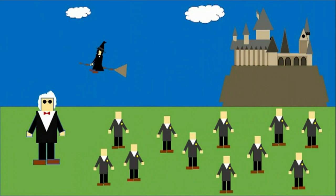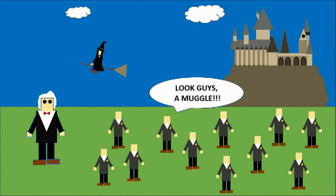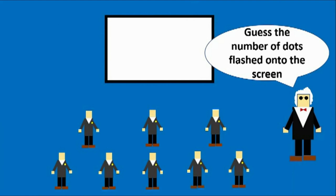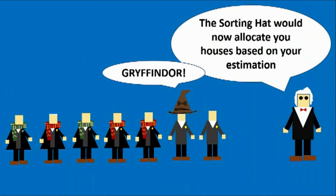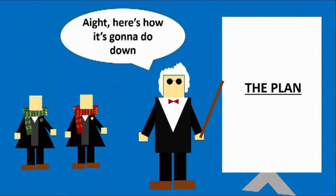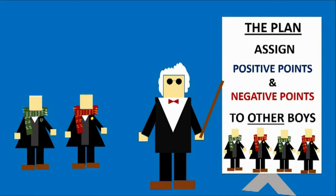In the first experiment, Tajfel told the boys they had to estimate the number of dots flashed onto the screen. After the boys had estimated the number of dots, they were divided into two separate groups. After they had been divided into groups, the boys were individually told by the experimenter that they now had to allocate positive and negative points to the other boys in the experiment. The boys were also told they would receive real money based on how many points their team had at the end of the experiment.